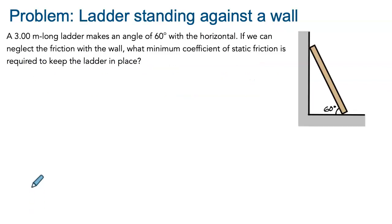Let's set up the problem. We have a 3 meter long ladder that makes an angle of 60 degrees with the horizontal. If we can neglect the friction with the wall, the question is what minimum coefficient of static friction is required to keep the ladder in place, so to prevent it from sliding.